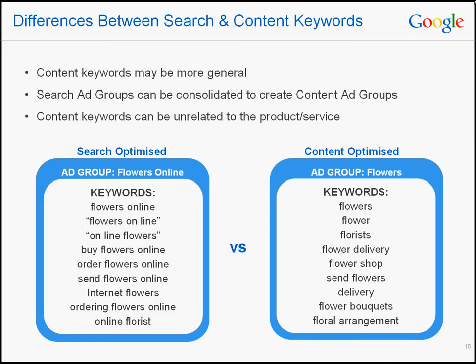There are a few key differences between the keywords we use on the search and content networks. Content keywords may be more general — for example, it's not ideal to add the keyword 'flower' in a search-optimized campaign because it's too general and may not be cost efficient. However, within the content ad group, the general keyword 'flowers' will not have that negative effect and will add to the overall theme. Additionally, search ad groups often work well when very specific — a real estate agent might run separate ad groups for 'home' and 'house'. Running such specific ad groups would hinder the system's ability to determine a concept for the content network, so there may be times when you can consolidate search ad groups to create content ones.